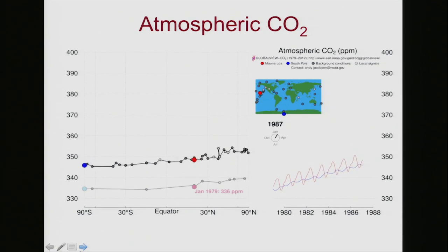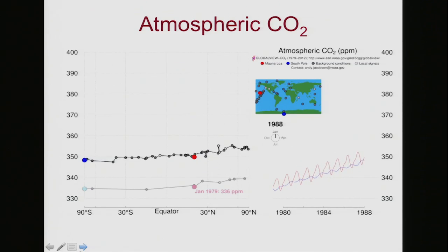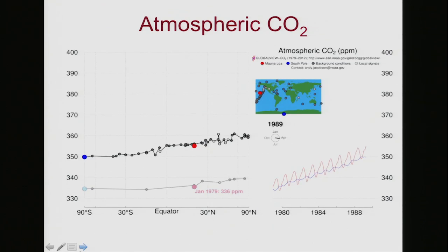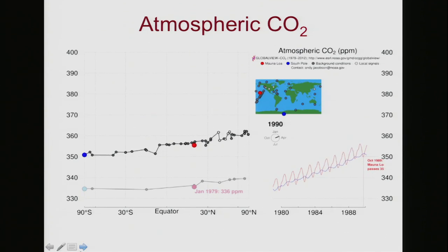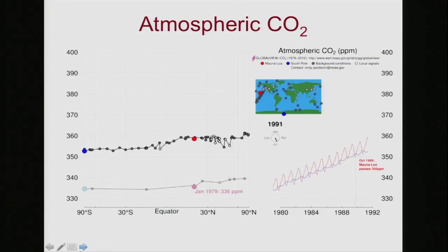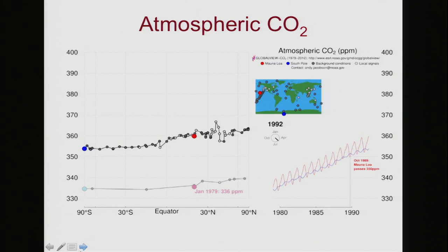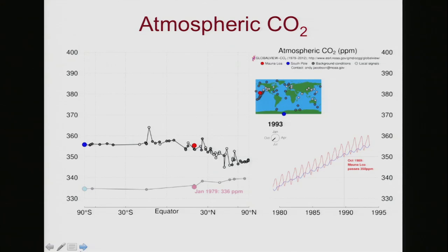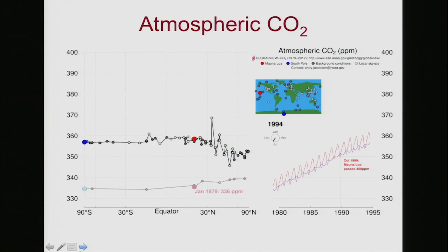During the spring and summer, plants are taking CO2 out of the air. During the winter, nothing can take the CO2 out, so it's all being added by industry. Overall, these levels are rising — they started at only 336 parts per million in 1979, and by 1993 we're already up to about 360 parts per million.